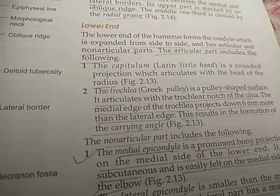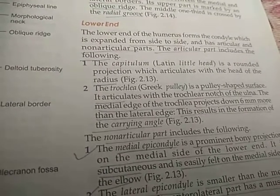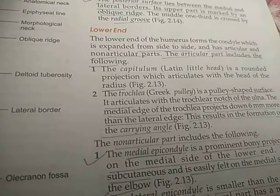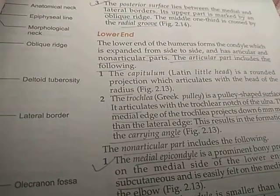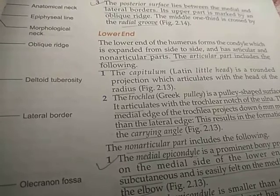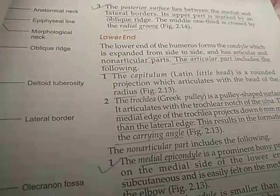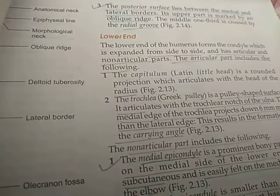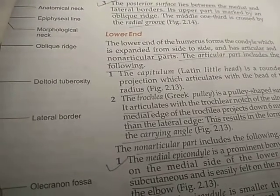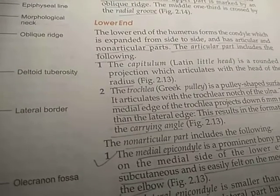Good morning students, welcome back again in the Unite Me Lecture. In the last video we discussed about the humerus and its features. In features we already studied the upper end and the shaft, what are the borders and surfaces situated in the shaft region, and what are the parts situated in the upper end. Now in today's section we will discuss about the lower end.